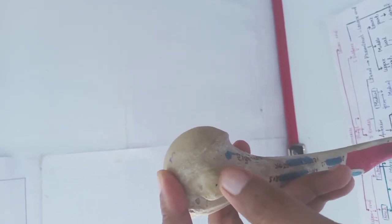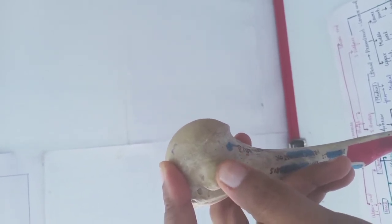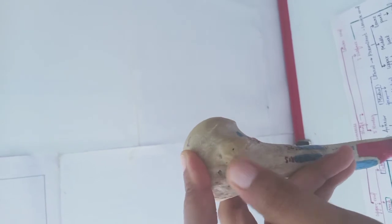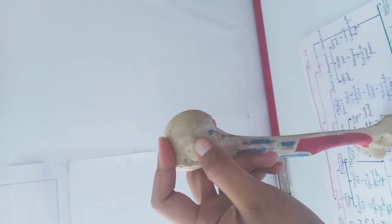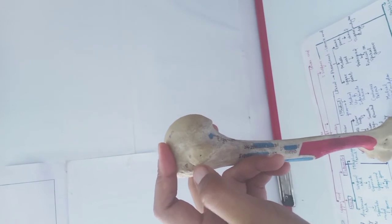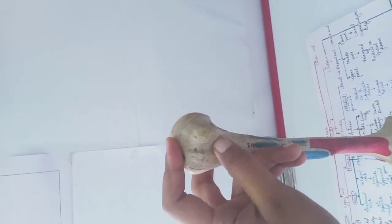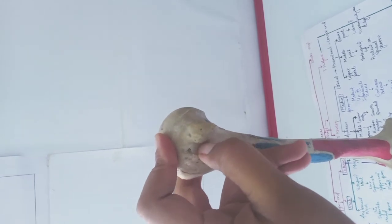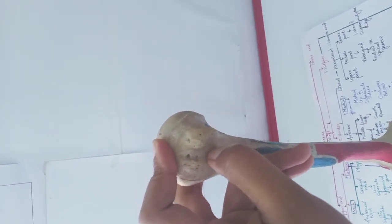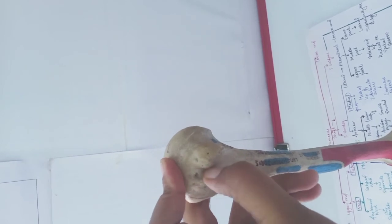This is the front of the upper end and lateral means this side. Lateral to the lesser tubercle, intertubercular sulcus is present.